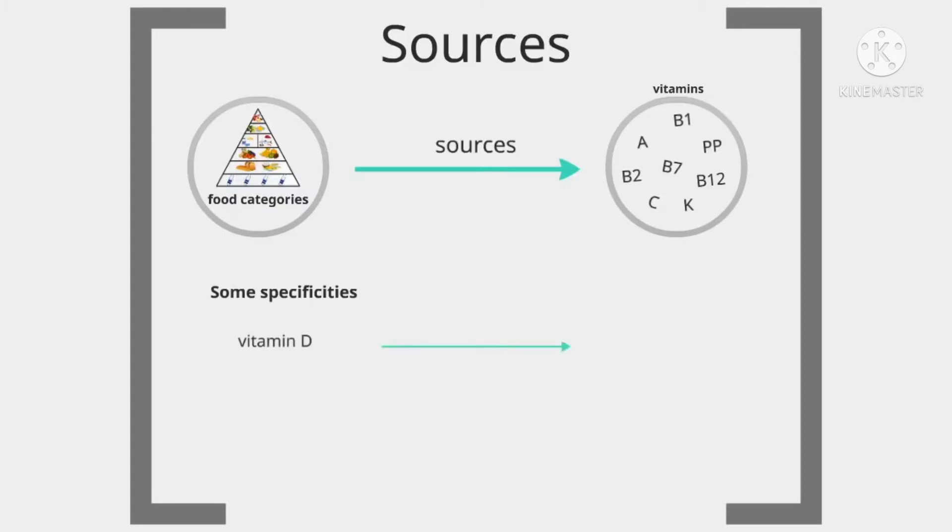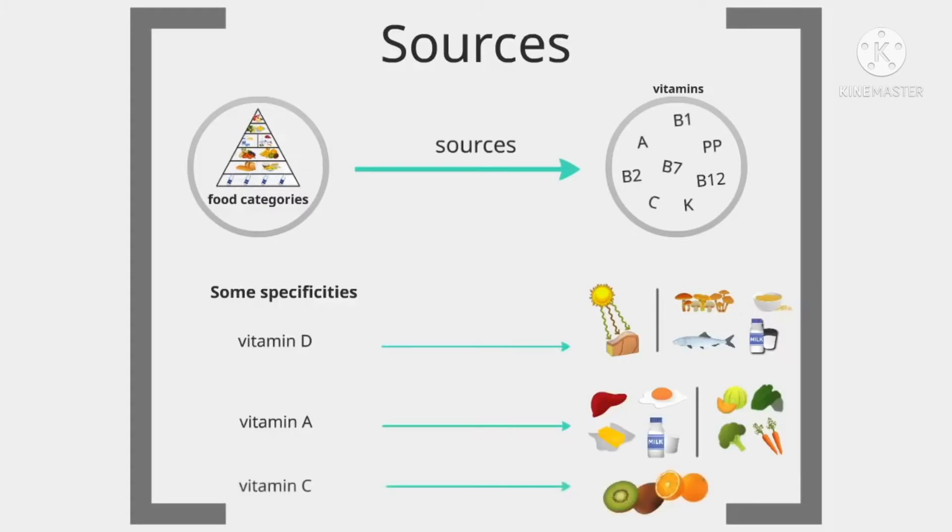Vitamin D can be produced in the skin using certain sun rays and also obtained from certain foods, both plant and animal, mostly in fish oils. Vitamin A can be found in animal products such as liver, milk, butter, and eggs, and also in vegetable products like melon, spinach, broccoli, and carrots. Finally, vitamin C can be obtained from certain fruits such as cassis, kiwi, and citrus.